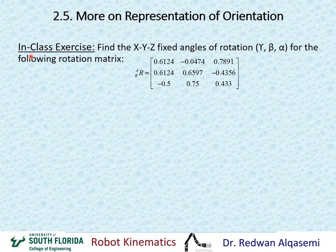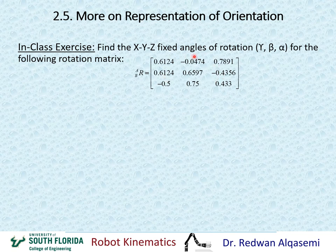In-class exercise: Find the x, y, z fixed angles — gamma, beta, and alpha — for the given rotation matrix R_{B/A}, which is a general matrix representing rotation in x, y, and z. Please pause the video, work on this exercise on your own, then resume to see the answer.